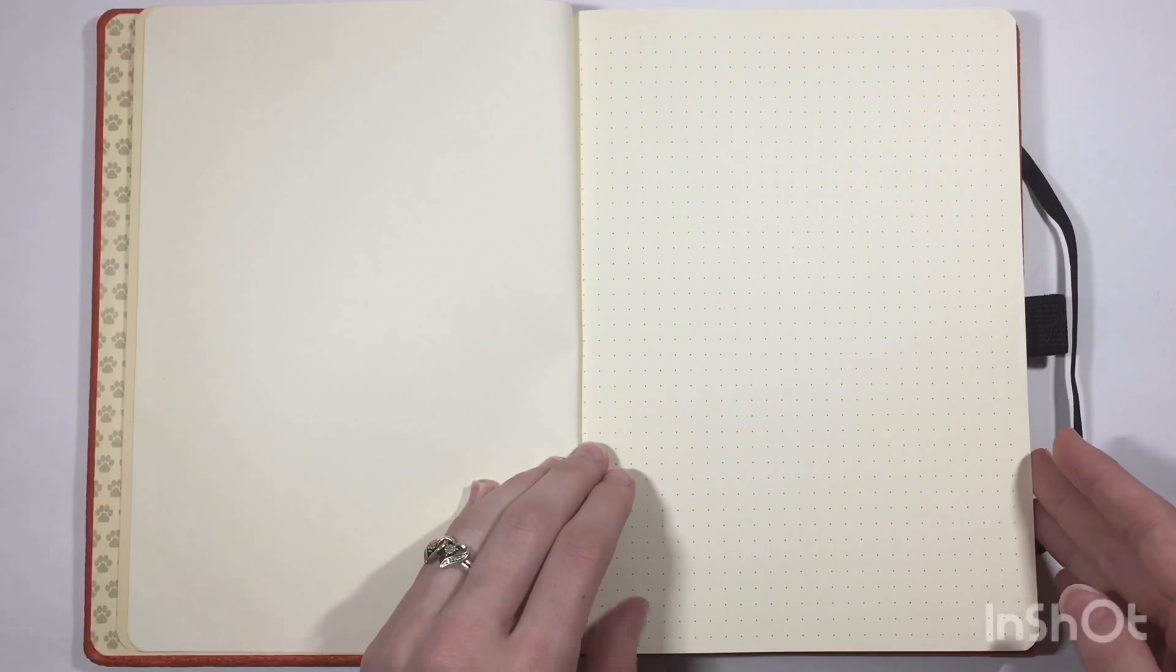This one does have cream pages instead of white. So for example, this is a white index card. You can see that it's cream compared to white, but I think it's worth it because it is very good value for the money.